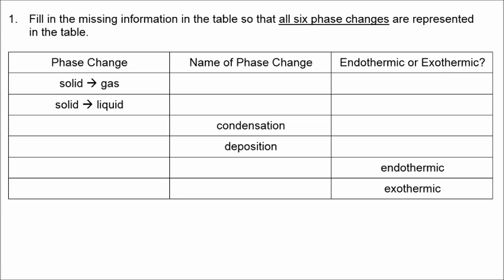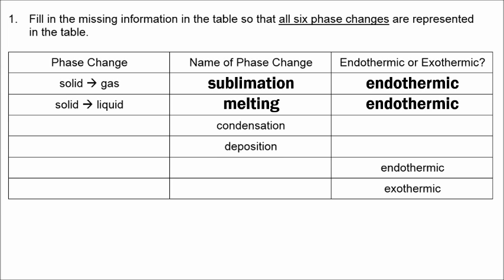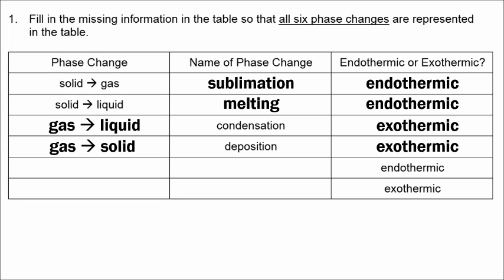We'll start with solid to gas, which is called sublimation, and that is an endothermic phase change because heat is absorbed. Solid to liquid is melting, which is also an endothermic phase change. Condensation is going from a gas to a liquid, but that is an exothermic phase change because heat is released. Deposition is from gas to solid, and that's also exothermic because heat is released.